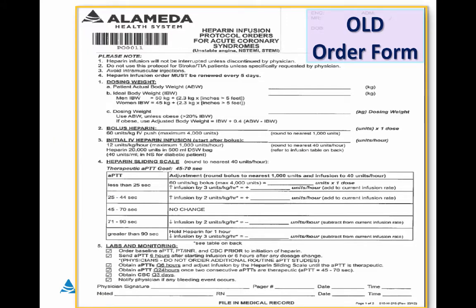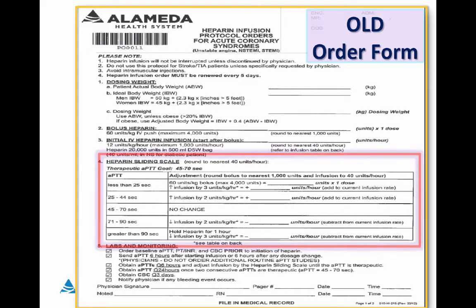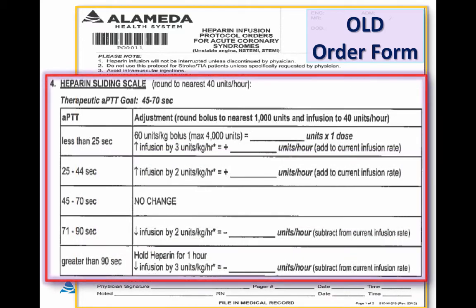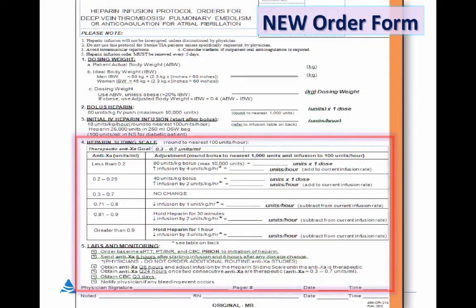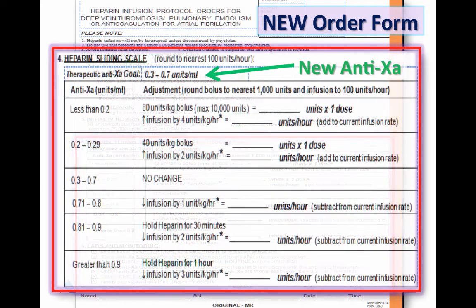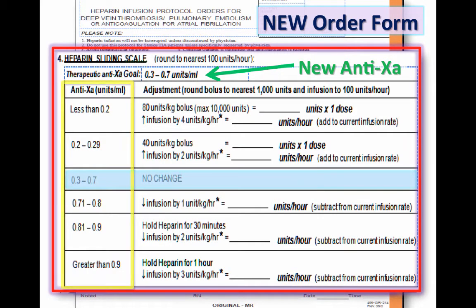Here's what our old order form looks like. I'll blow that up for you — there's the sliding scale, and you can see that our therapeutic PTT goal was 45 to 70 seconds. Here's our new order form and the heparin sliding scale with our therapeutic anti-Xa goal range of 0.3 to 0.7.